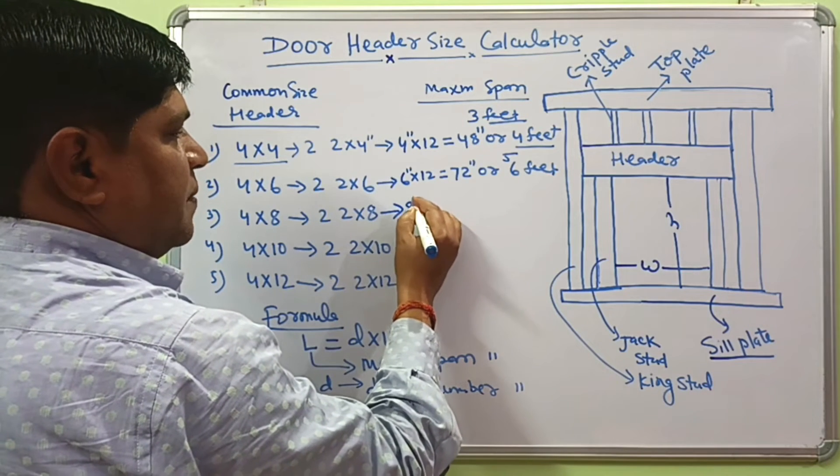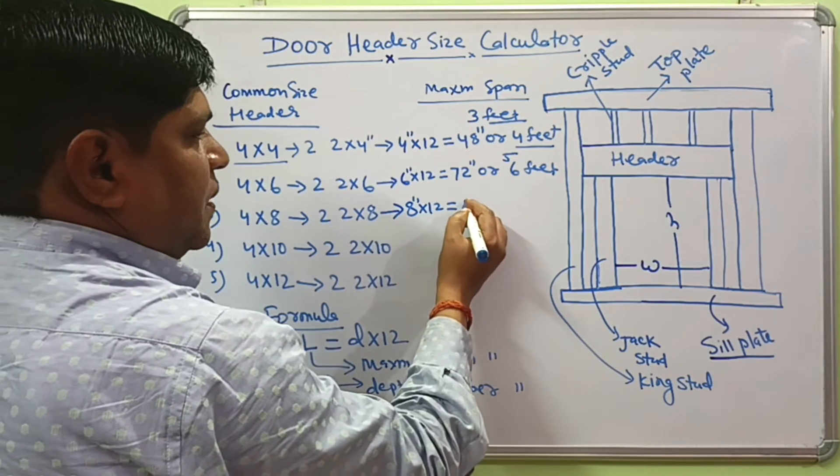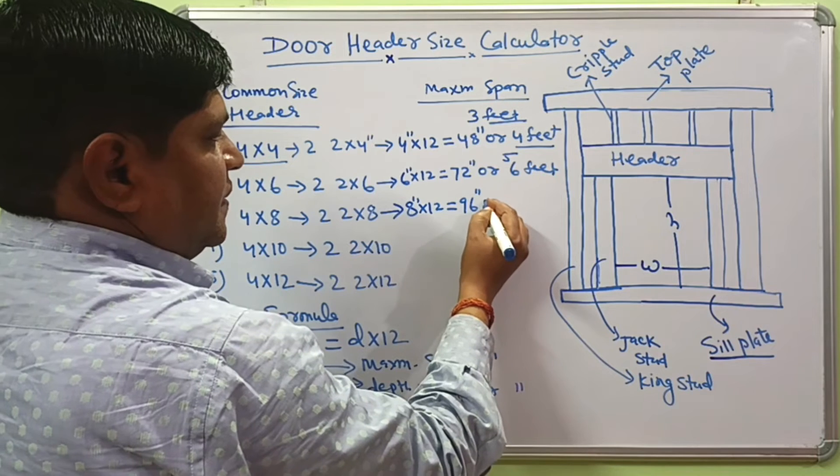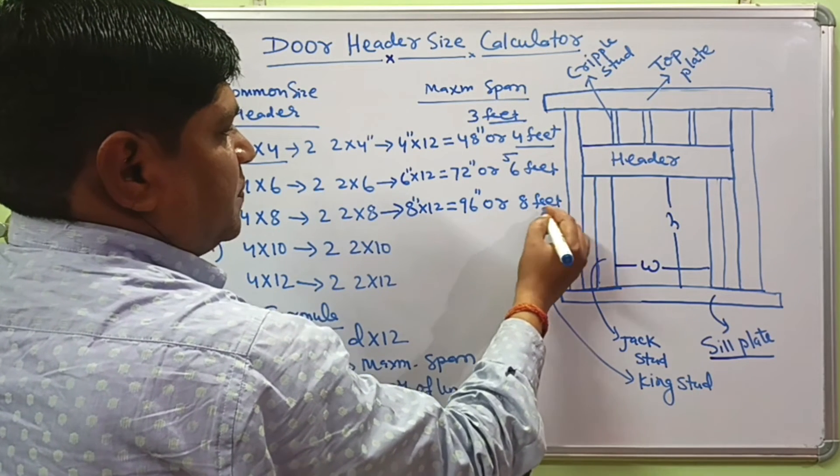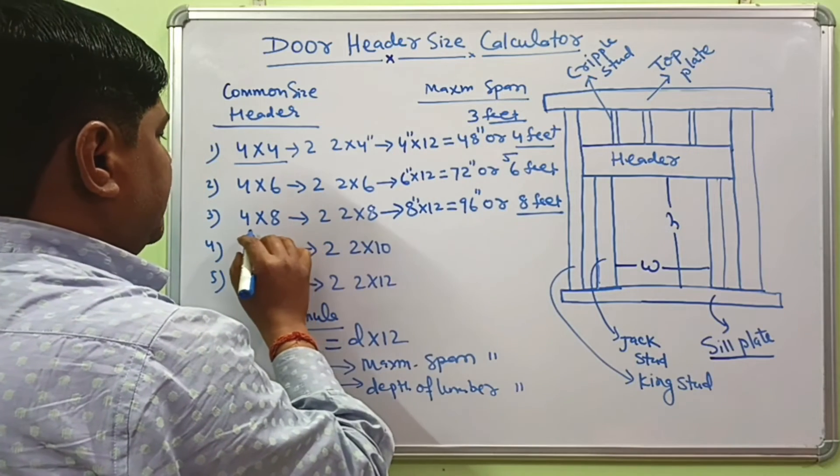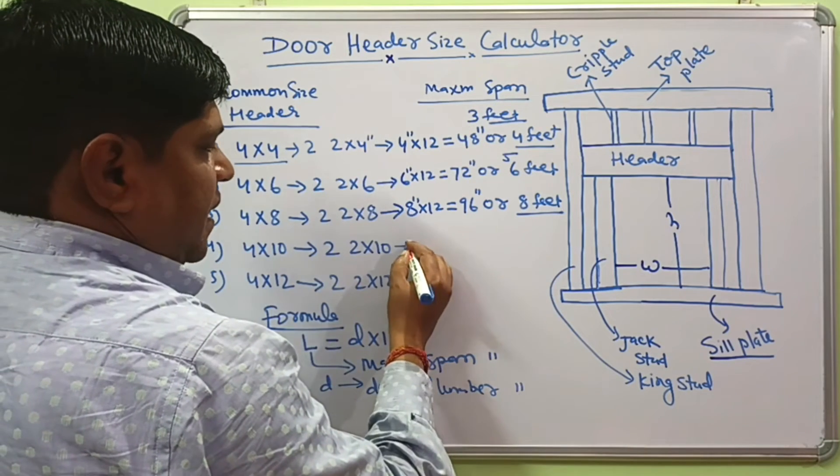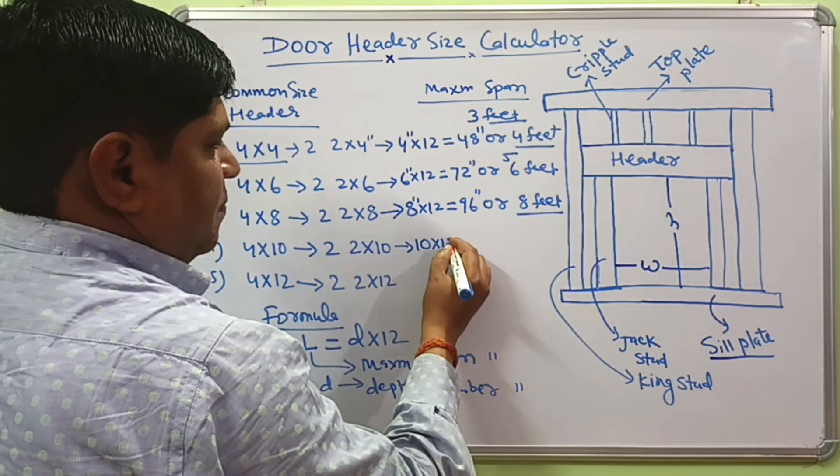Now, 8 times 12. This will come 96 inches or 8 feet. If your span is 8 feet, then you should use 4 by 8 header.